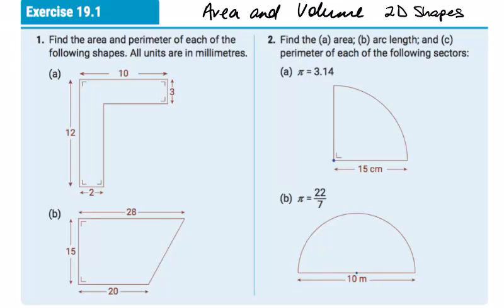We're going to look at area and volume starting with 2D shapes. Be careful to read each question carefully. Check the units that's given in the question. Sometimes in the diagram can be different. We're asked to find the area and perimeter of each of these following shapes and all units are in millimeters.